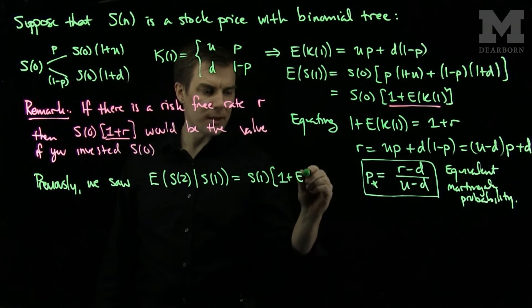then we can see that the expected value of S_n given S_{n-1} will be S_{n-1} times [1 plus the expected value of K_1].